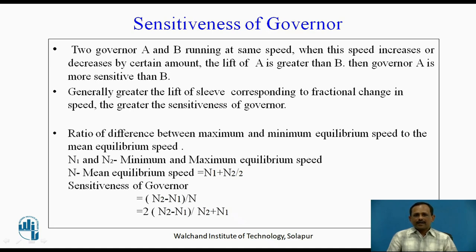Where n1 and n2 are the minimum and maximum equilibrium speeds, n is the mean equilibrium speed which is equal to (n1 + n2)/2. Therefore, sensitiveness of the governor = (n2 − n1)/n, which is equal to 2(n2 − n1)/(n2 + n1).